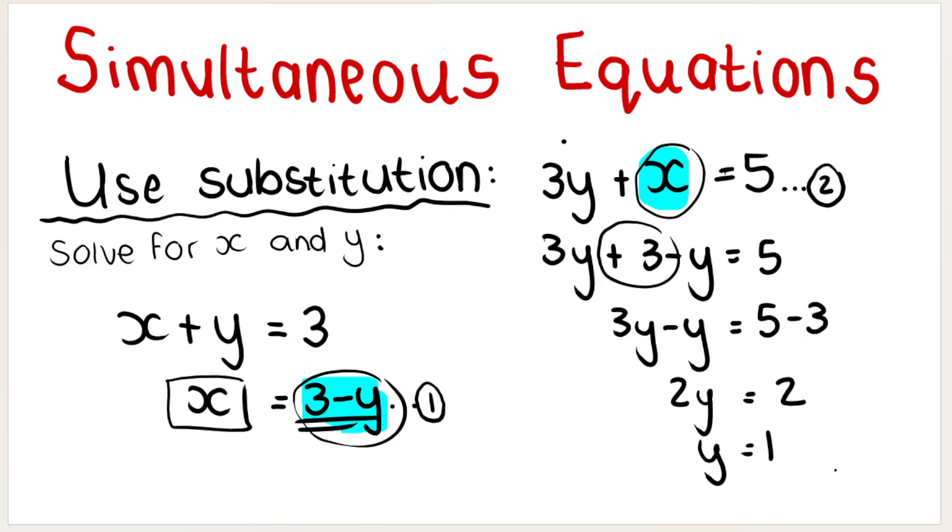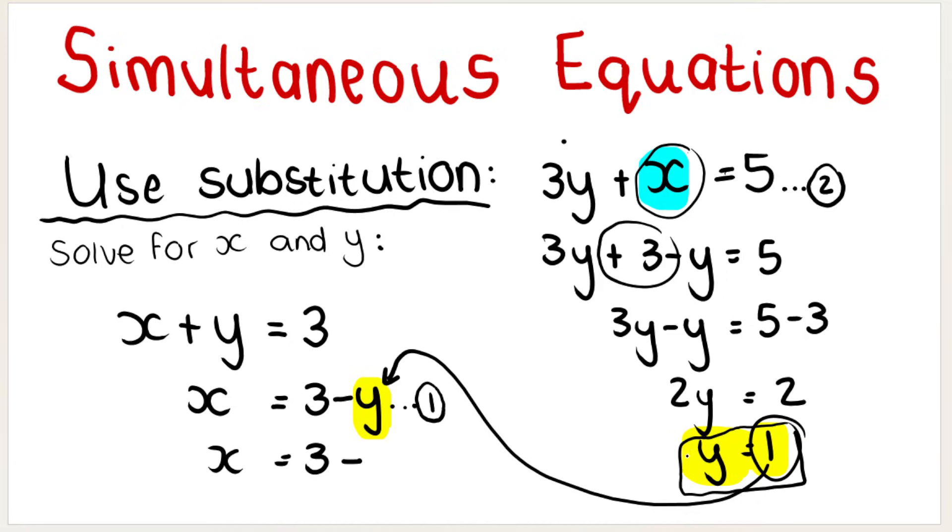We've solved our first variable. Then once you know Y is equal to one, in order to solve for X, you simply take your answer for Y and substitute it in the place of Y in the other equations. So instead of Y in this equation, we are going to put the number one. So X is equal to three minus one, which is two.